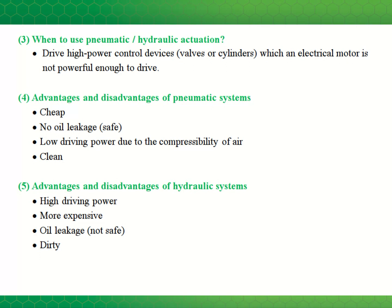Pneumatic systems can be used to provide control signals to final control devices. There can be a blend of electronic and pneumatic signals in a control system. You might want to use pneumatic signals for devices that require a large force to switch, like some valves — you could use a pneumatic signal to switch a large valve. We'll look at pneumatic switching in the coming lectures.